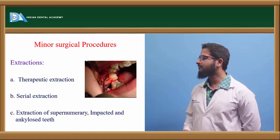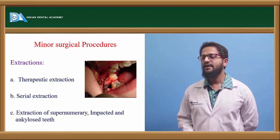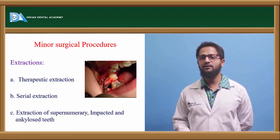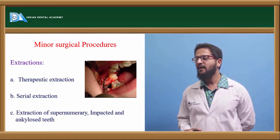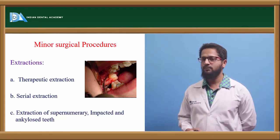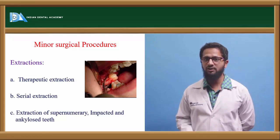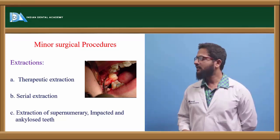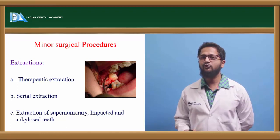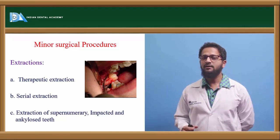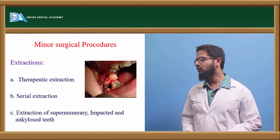Extraction of supernumerary, impacted, and ankylosed teeth is also very important. If supernumerary or ankylosed teeth are left without removing them, they will affect the orthodontic movement of other teeth. Hence, proper extraction must be done. Before extraction, complete thorough evaluation of their exact location and the correct approach should be performed. They are usually approached from either the palatal or the buccal aspect. A full-thickness flap is reflected, the teeth are extracted without causing damage to adjacent tooth roots, and the flap is repositioned and sutured.